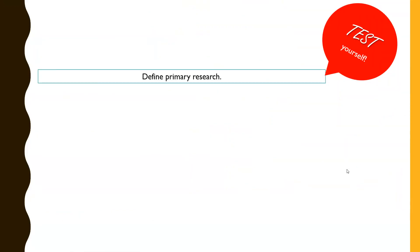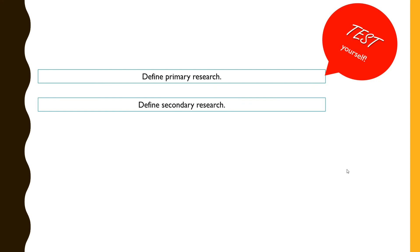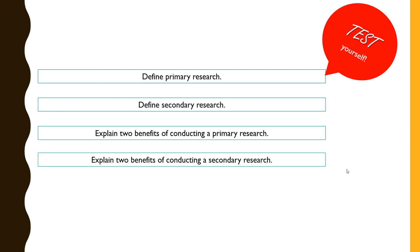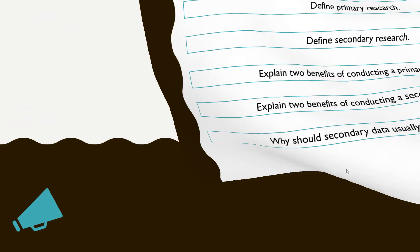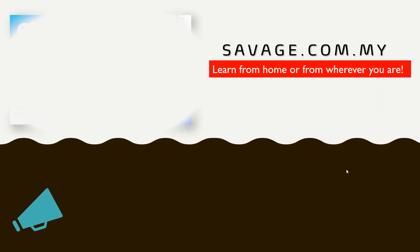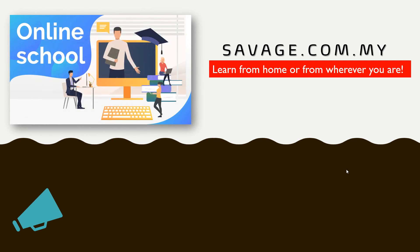Now let's test yourself with some questions. You should be able to define primary research, define secondary research, explain two benefits of conducting primary research, explain the benefits of conducting secondary research, and also explain why secondary data should be collected first. Those are five questions for you to try.